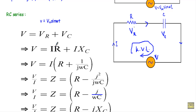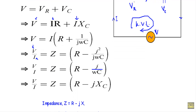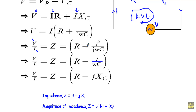We know VR equals IR and VC equals IXC. Taking the current phasor I common: V equals I(R + XC), where XC equals 1/(jωC). Taking the ratio of phasor voltage to phasor current gives the impedance Z. So Z equals R + 1/(jωC). Since 1/(jωC) equals −j/(ωC), because multiplying through by j/j introduces a j² = −1 in the numerator...